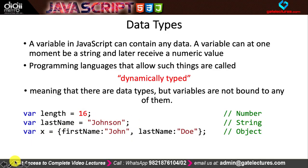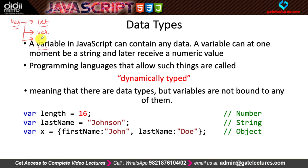In JavaScript, variables are basically containers which contain some data. We have three kinds of variables: you can create a variable using the 'let' keyword, the 'var' keyword, or the 'const' keyword. The 'const' keyword creates a constant variable whose value is always constant. The 'var' is an older type, while 'let' is the newer way of creating variables, which removed some of the problems with 'var'.